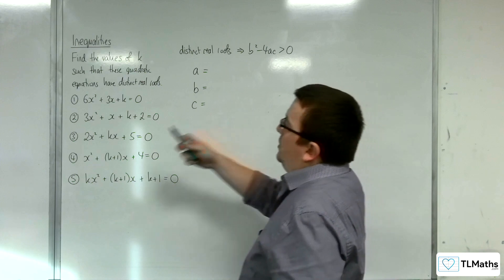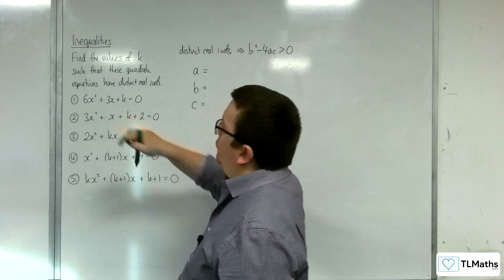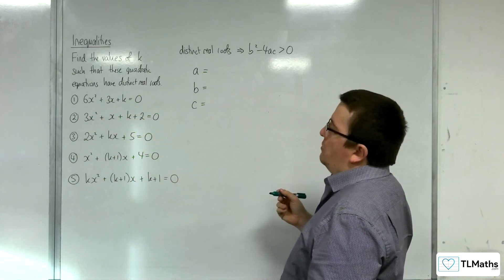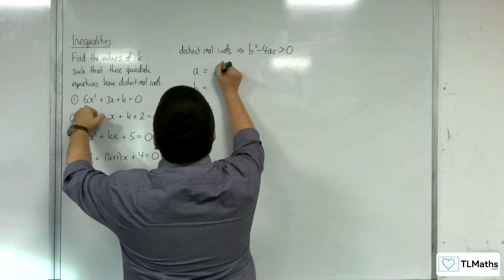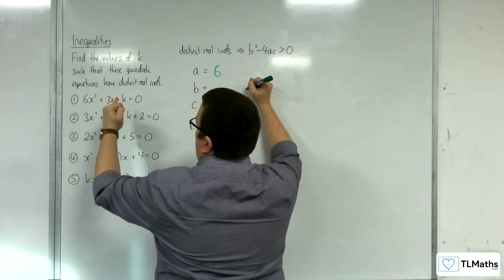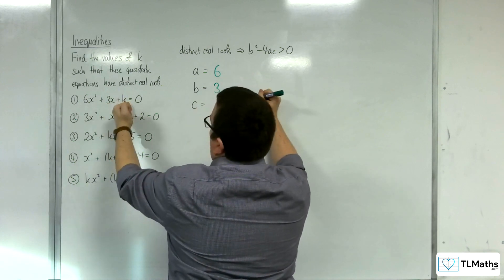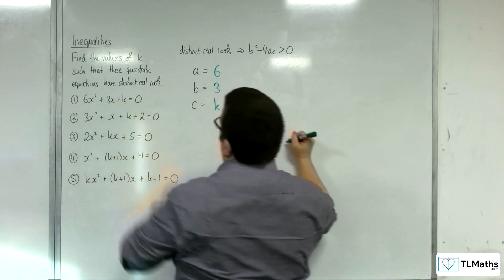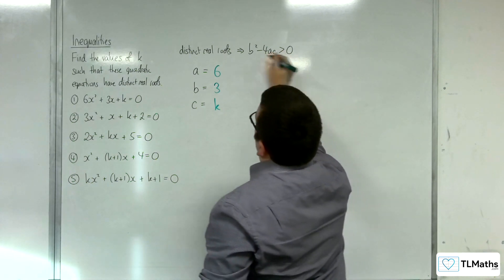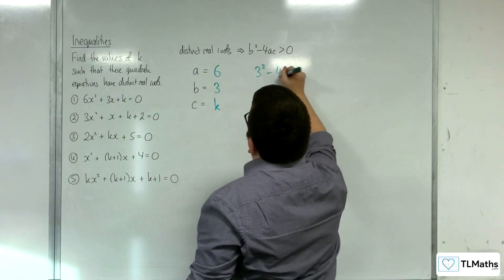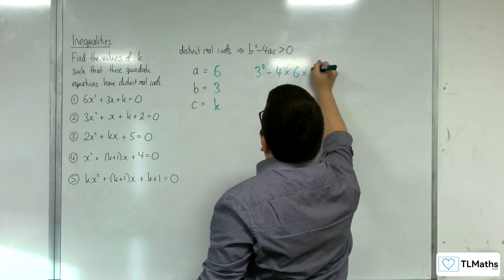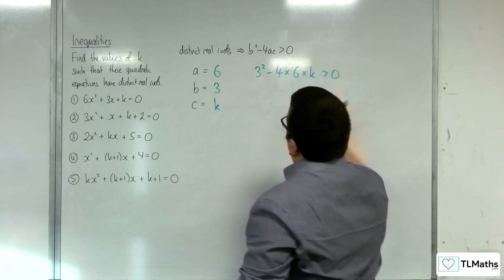For question number 1, we have 6x squared plus 3x plus k equals 0. So a is the value in front of the x squared, so 6, the coefficient of x squared. 3 is the coefficient of x, and k is what you have left over. Substituting into the inequality, we have 3 squared, take away 4 lots of 6 times k is greater than 0.